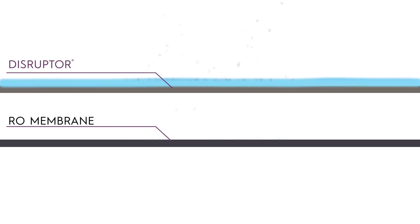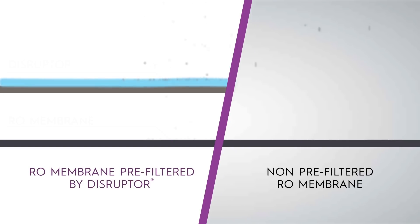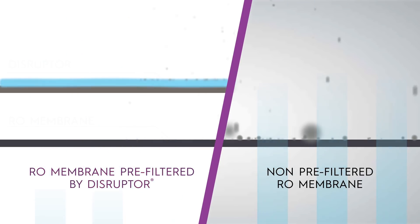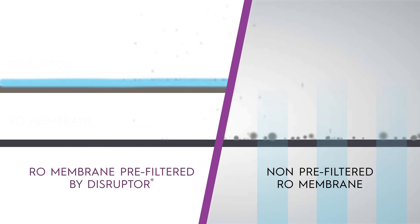Disruptor goes further than that. The ability to remove membrane biofoulants such as organic acids, bacteria, and cellular debris makes Disruptor an effective pre-filter to protect reverse osmosis membranes from biofouling. This means improved performance and life of reverse osmosis membranes and faster production of reverse osmosis water, with far less reject water down the drain, as well as energy savings.